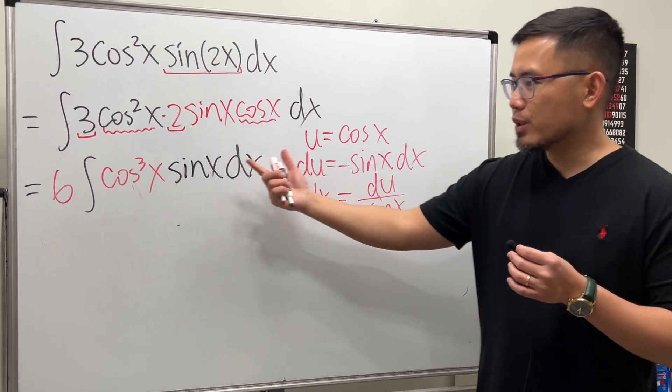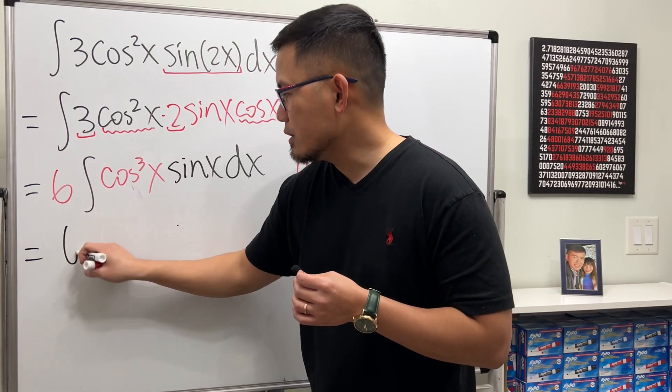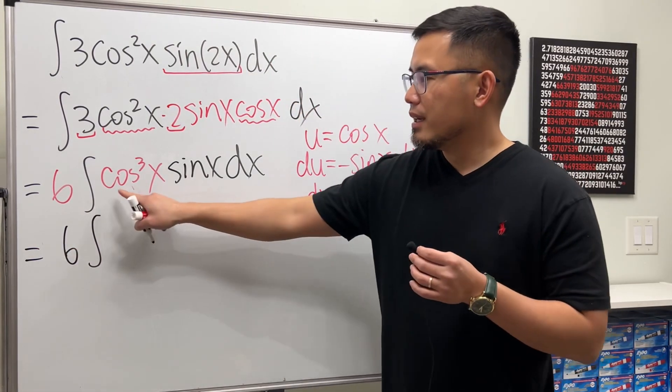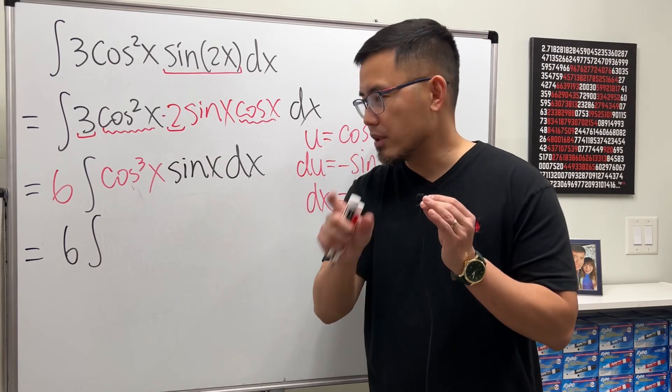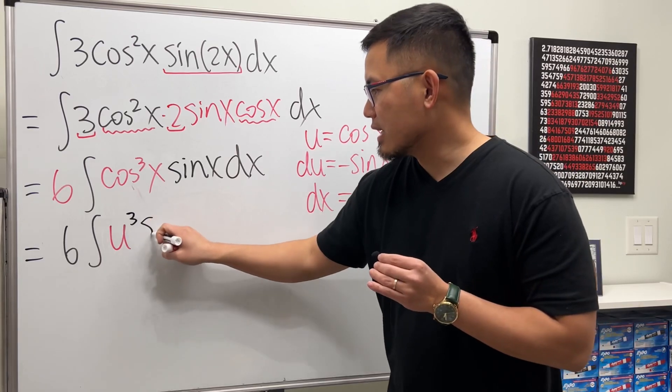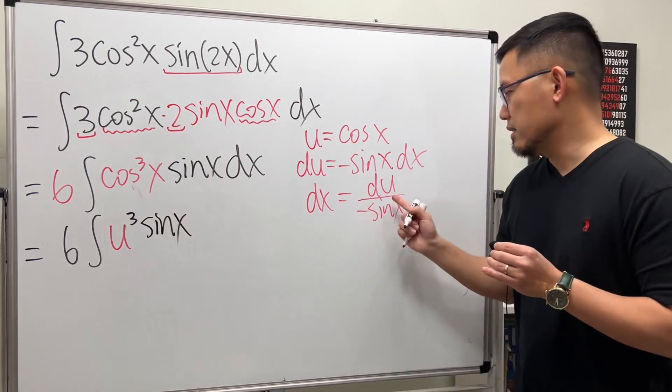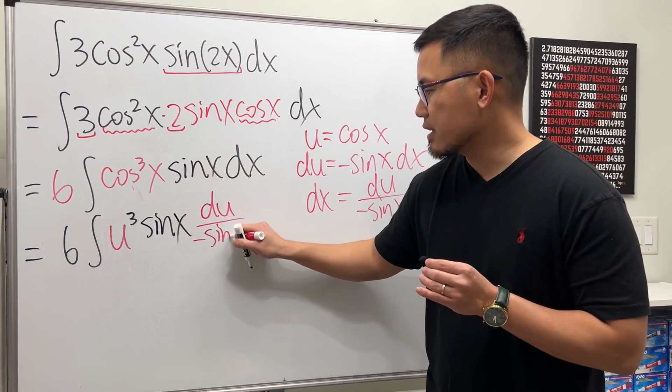Now we can be happy because we can take this integral to the u world. So we get the 6 on the outside, integral cosine to the third power, right? So it's cosine x, that means we have the u to the third power. Here we have the sine x and the dx is this du over negative sine x.